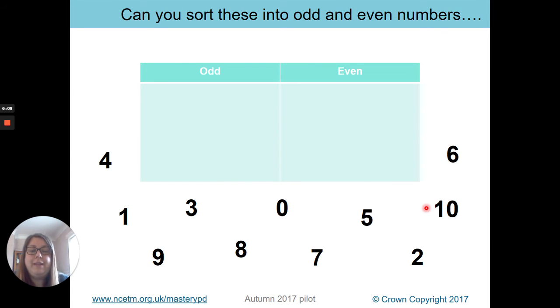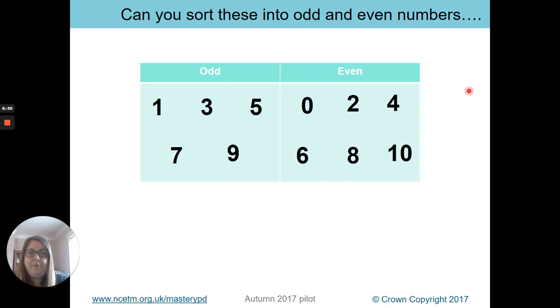So what I want you to do is I've written numbers from zero to ten and I want you to sort these into odd and even numbers. So you need to write odd and write even and then using the numbers, put them underneath to tell me which are the odd numbers and which are the even numbers. So pause the video and have a go. So here we have sorted our odd and even numbers. So remembering odd numbers are one, three, five, seven and nine and even are zero, two, four, six, eight and ten. Give yourselves a big tick and thumbs up if you did that.